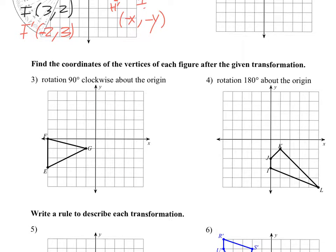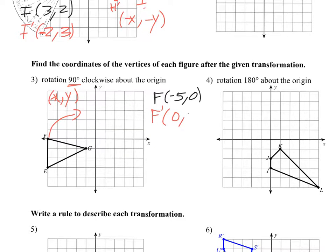So this problem says: find the coordinates of the vertices of each figure after the given transformation. We're going to do exactly what we did above. Where's F? F is at 4, negative 5. This time we're rotating clockwise 90 degrees. So 90 degrees is only one quadrant — each quadrant is 90 degrees. In that quadrant, the X's are negative and the Y's are negative. We switch the X and Y, and now your Y has to be positive. My Y here is negative, so I'm going to change that sign.